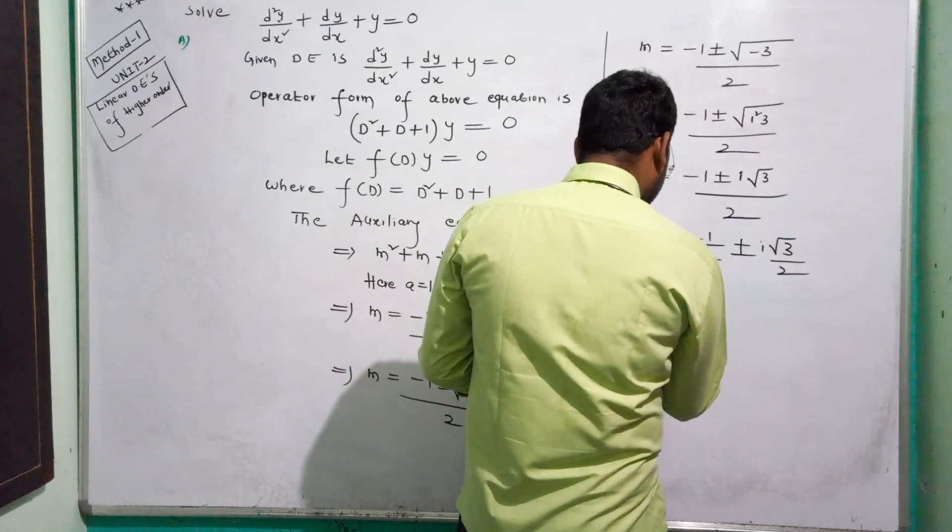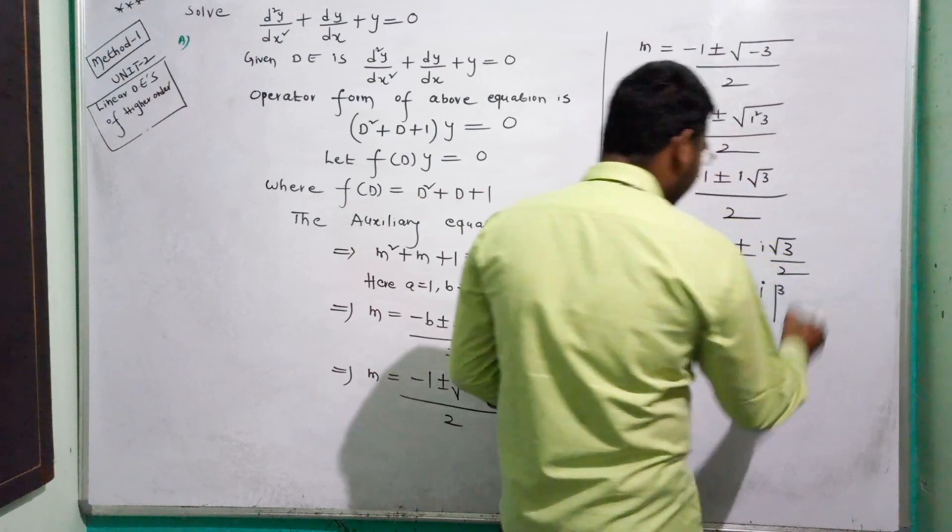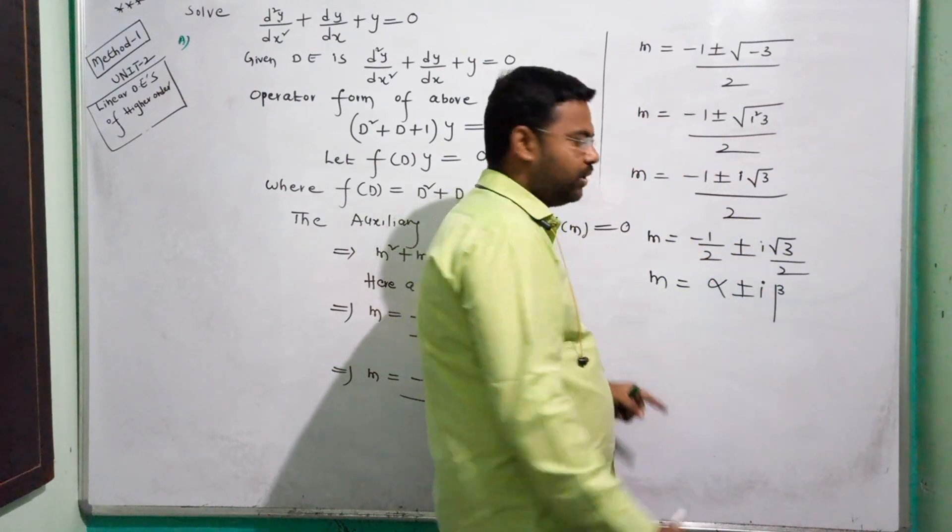So these are complex roots: alpha plus or minus i beta. Alpha is minus 1 by 2, beta is root 3 by 2.